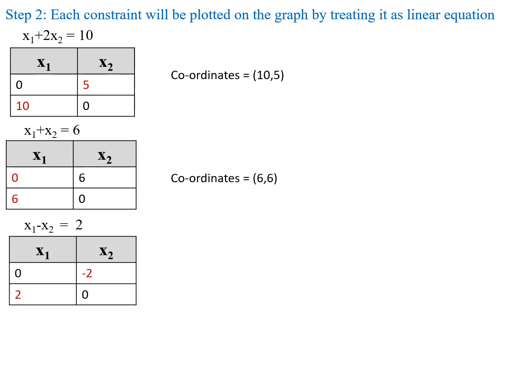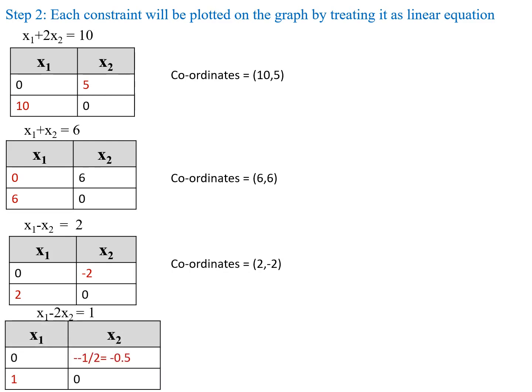For the third constraint equation x1 minus x2 equal to 2: if x1 equal to 0 then x2 equal to minus 2. If x2 equal to 0 then x1 equal to 2. Coordinates are (2, minus 2). For the fourth constraint equation x1 minus 2x2 equal to 1: if x1 equal to 0 then x2 equal to minus 0.5. If x2 equal to 0 then x1 equal to 1. Coordinates are (1, minus 0.5).